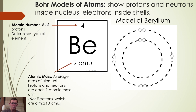You also learned that the atomic mass of an element is determined by the number of protons and neutrons inside of it. Electrons contribute almost no mass to the atom because their mass is almost zero atomic mass units.